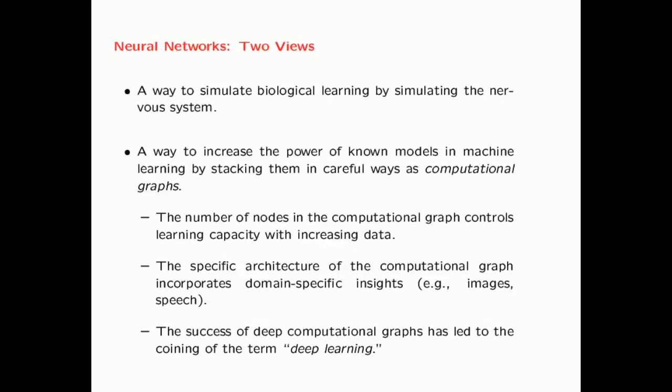The specific architecture of the computational graph incorporates domain-specific insights. For example, images have a very specific type of structure, so by using a specific type of architecture like convolutional neural networks, you can do better with image data. The architecture of the computational graph has the ability to incorporate knowledge about the domain at hand. Many of these computational graphs are very deep because they have many layers, and the success of such deep computational graphs has led to the coining of the term deep learning in the past decade.